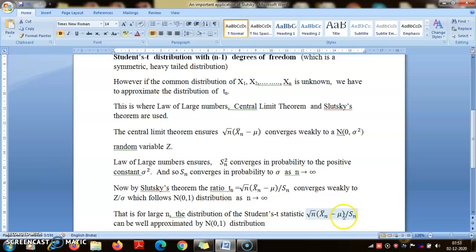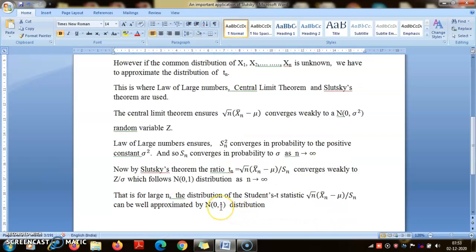So for large n, the Student's t statistic is well approximated by N(0,1) distribution. This is a famous result in probability and statistics. This is also known as the robustness of statistics.